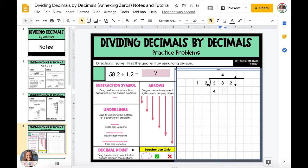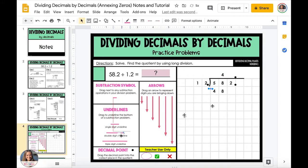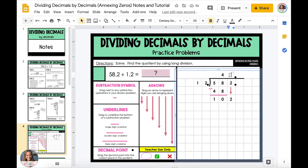Don't forget to bring the decimal point in your dividend straight up into your quotient. Then we're going to begin to divide just like we would with whole numbers.